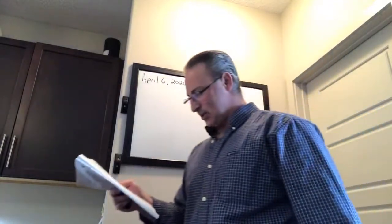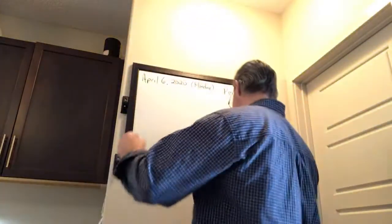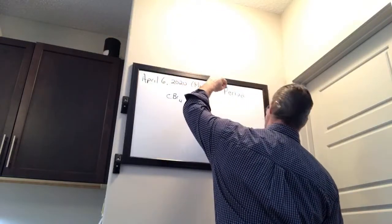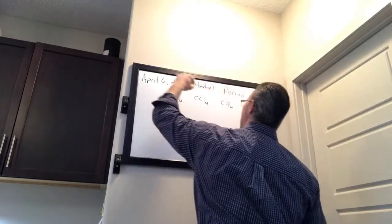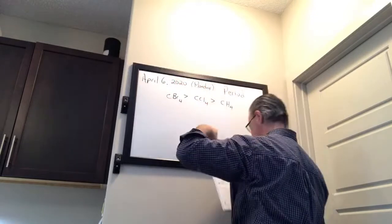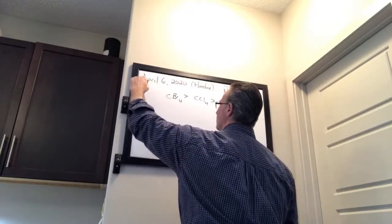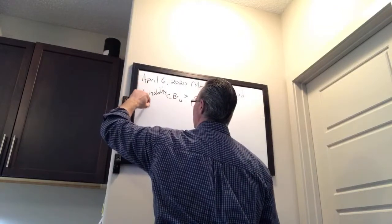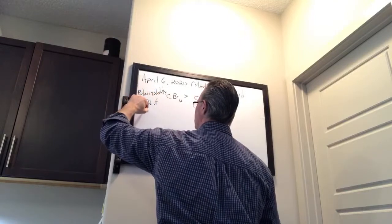On page 448 they ask you to rank a series of molecules according to the polarizability of their electron clouds and the strength of the resulting dispersion forces. I looked up the actual melting and boiling points to verify. The molecules given are CBr₄, CCl₄, and CH₄. Polarizability is highest with tetrabromomethane, followed by tetrachloromethane, then methane. The strength of London dispersion forces follows the same order.